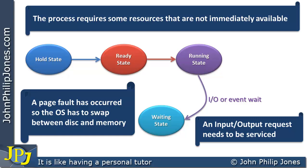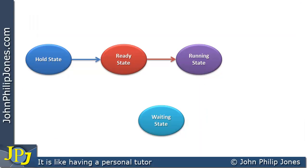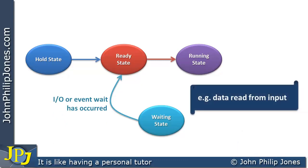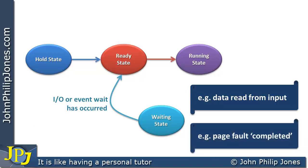Once the process is in the waiting state, it's not doing anything — it's simply waiting. When the I/O or event completes — for example, data has been read from disk into RAM, or a page fault has been resolved and machine code loaded into memory — the operating system moves the process control block from the waiting state back to the ready state.